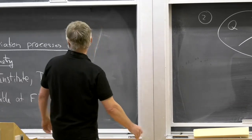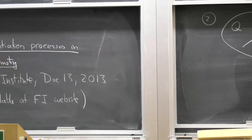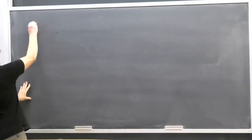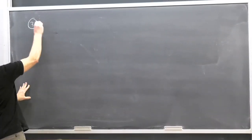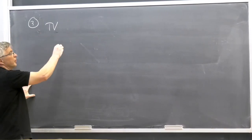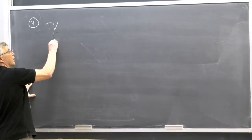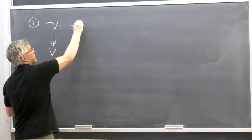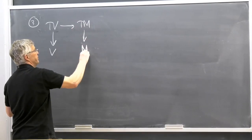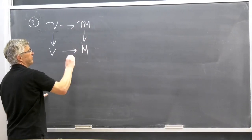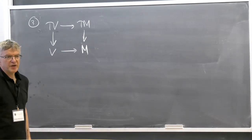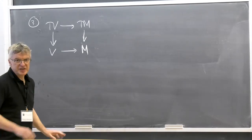The most important example is perhaps the tangent bundle of a vector bundle, which is a double vector bundle — it's a vector bundle in two ways. So we have these three examples, and there will be some more.